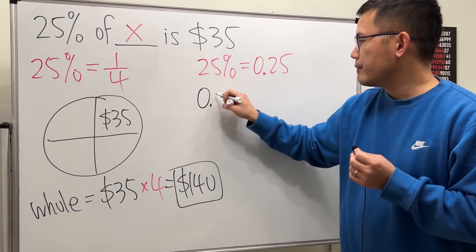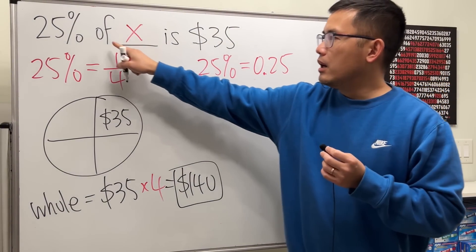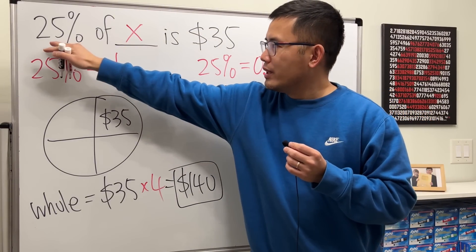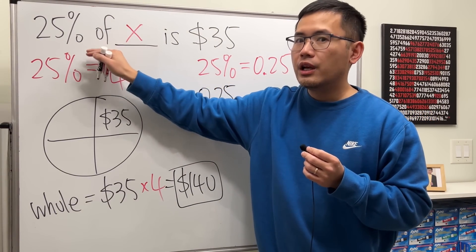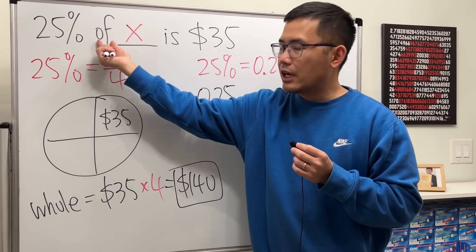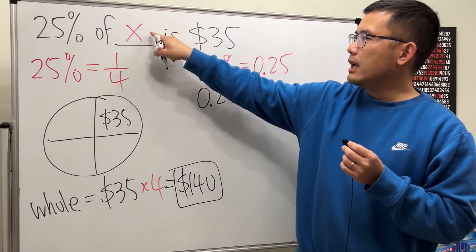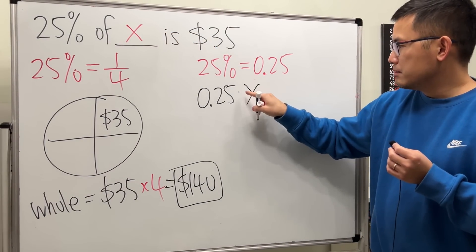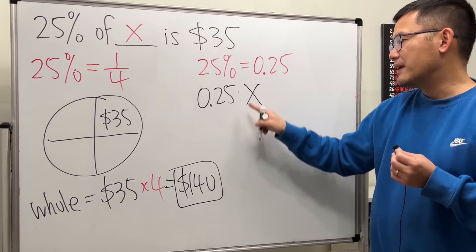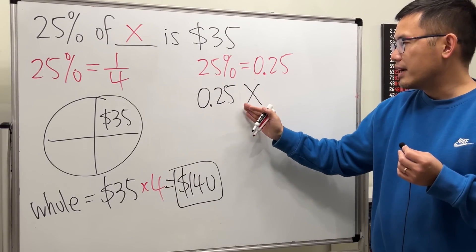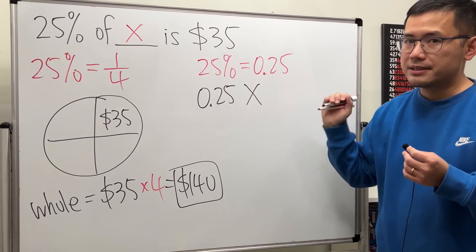Then 'of' means multiply when we are dealing with a percentage equation. Whenever you see 'of' by itself like this, we multiply. So we are going to multiply by x. My little dot means times x, and in fact you don't really need the dot—0.25x means 0.25 times x.